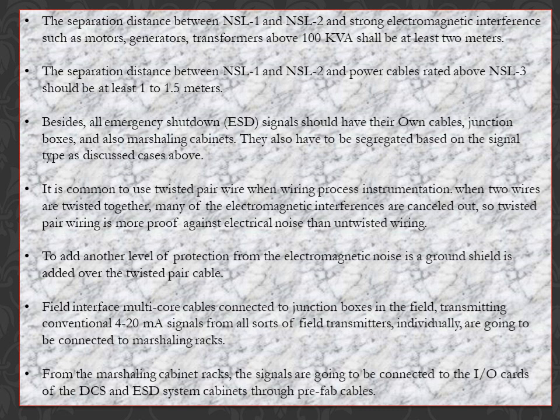It is common to use twisted pair wire when wiring process instrumentation. When two wires are twisted together, much of the electromagnetic interference is cancelled out, so twisted pair wiring is more resistant to electrical noise than untwisted wiring. To add another level of protection from electromagnetic noise, a ground shield is added over the twisted pair cable.